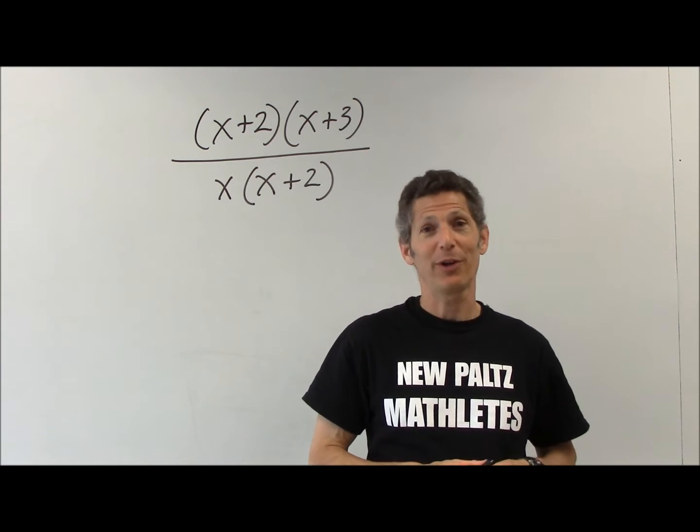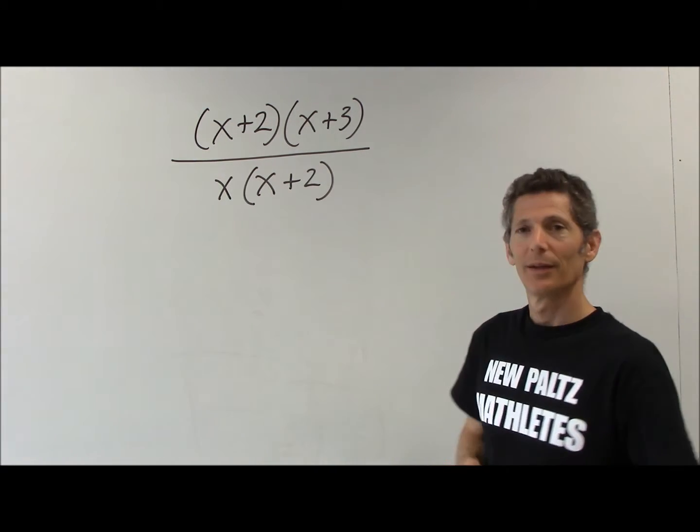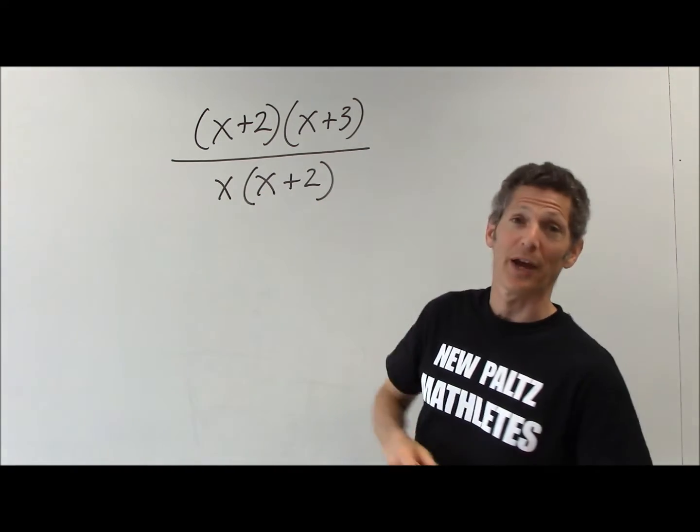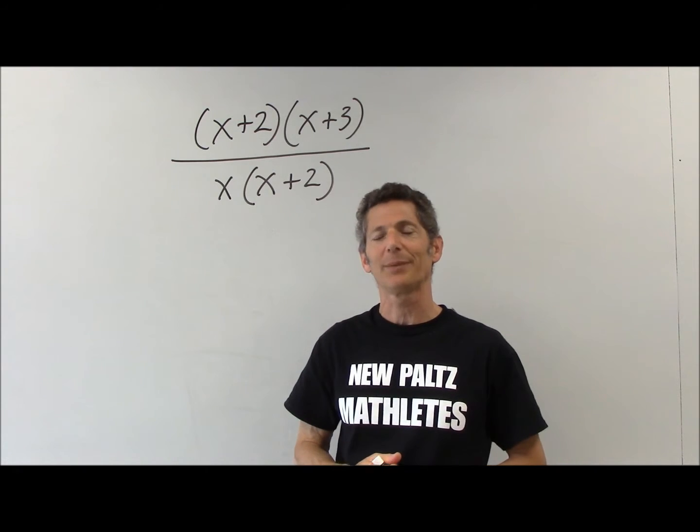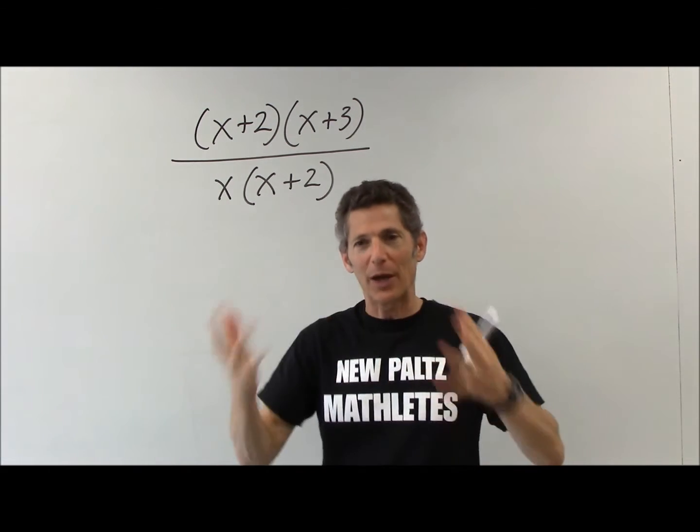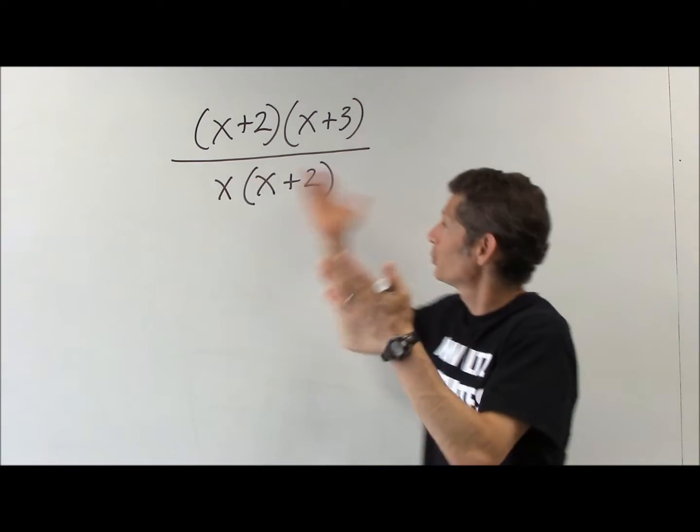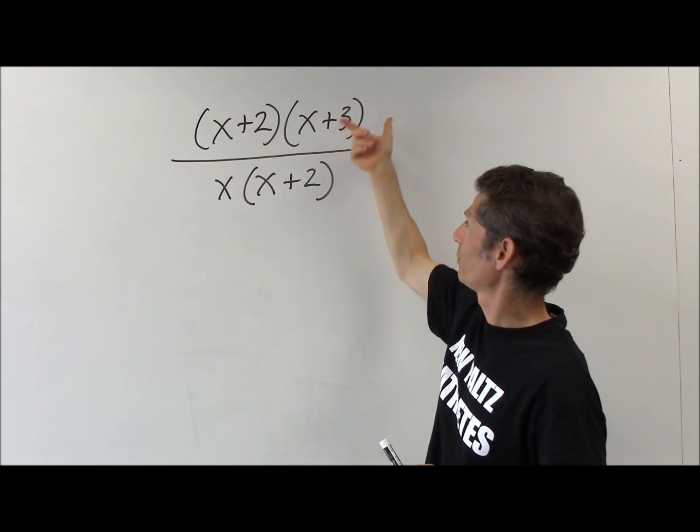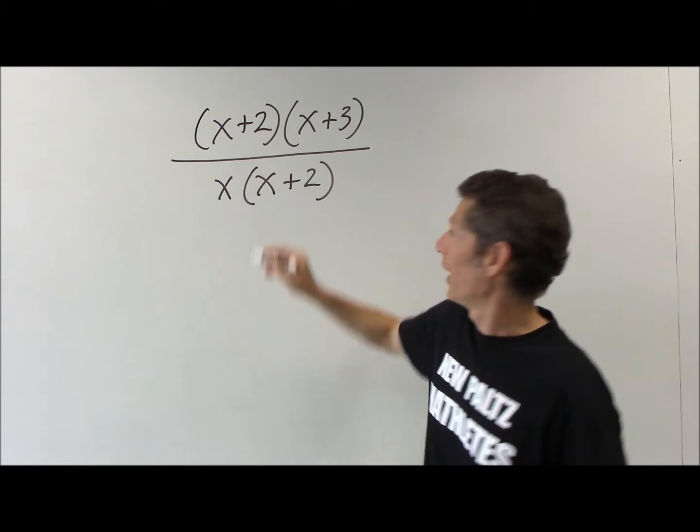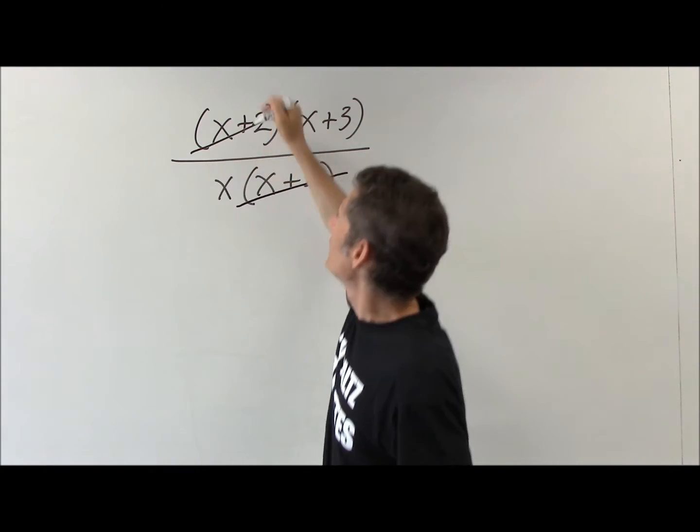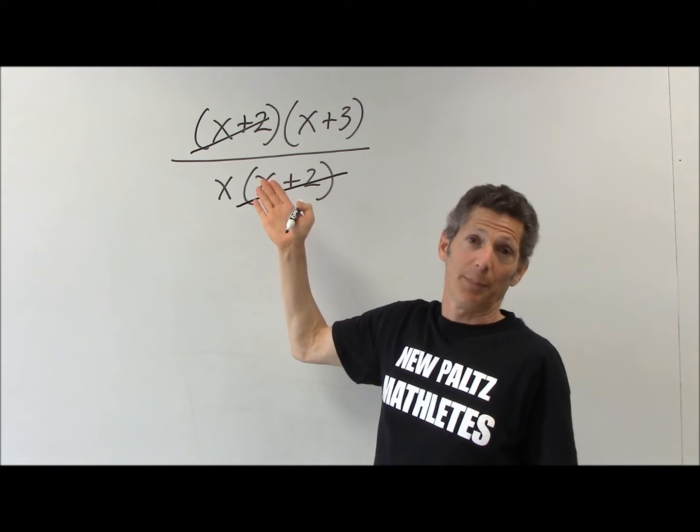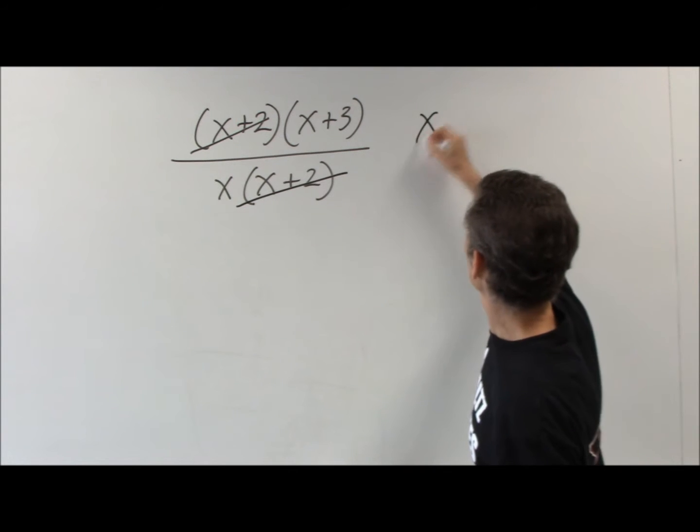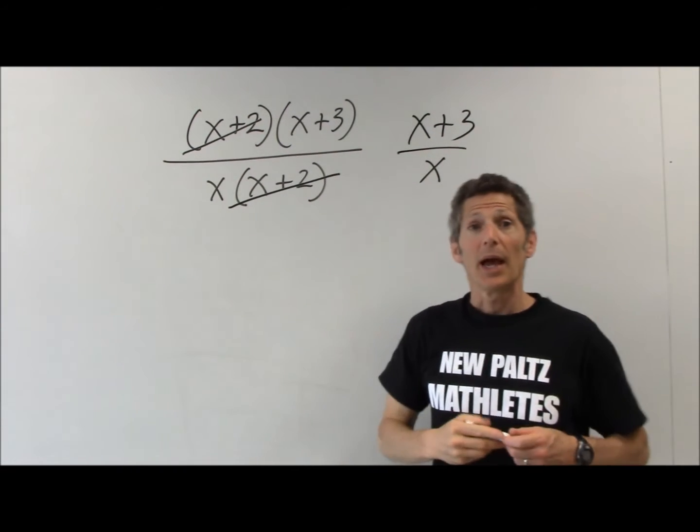You're talking about simplifying rational expressions. Here's a rational expression. Students know these rules, but they don't think about the problem completely—they just think about the rule. The rule here is if I'm multiplying things, x plus 2 times x plus 3 over x times x plus 2, I can simplify. These divide to make 1, and I'm left with x plus 3 over x.